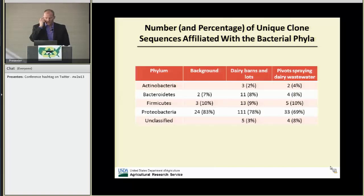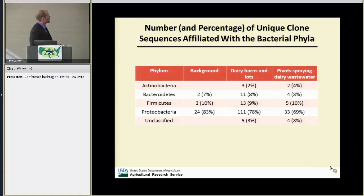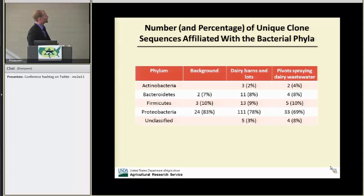I created a clone library of the 16S ribosomal RNA and sequenced it. According to sequence identification, the bacteria fit into four phyla. We identified more unique clones downwind of the dairies and downwind of the pivot spray dairy wastewater, though the percentage of the total compared to background was very similar. We identified some more actinobacteria and some unclassified clones downwind of those facilities.